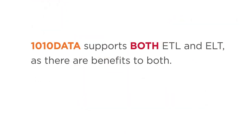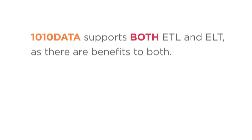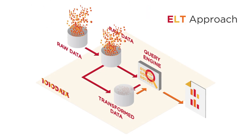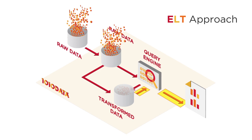1010Data supports both ETL and ELT, as there are benefits to both. With ELT, raw data loads directly into the platform, where data transformations happen without external processing. Transformations can be developed using 1010Data's TRS, then implemented with the platform's APIs and SDKs. The transformation outputs can also be saved as new tables for future analysis. The red arrows follow the flow of raw data as it undergoes data integration. The orange arrows track the flow of transformed data as it's used by analytical queries.